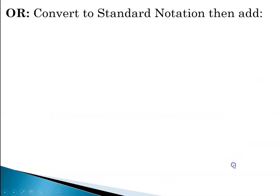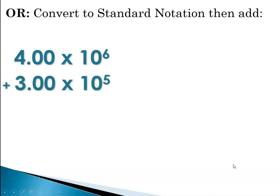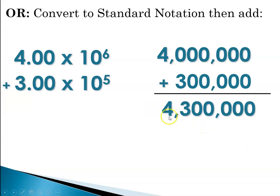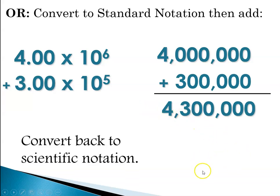The other way is to convert them to standard notation. So 4 times 10 to the 6 plus 3 times 10 to the 5 would be 4,000,000 plus 300,000. And when we add that together, we get 4,300,000. We can convert that back to scientific notation and get 4.30 times 10 to the 6.